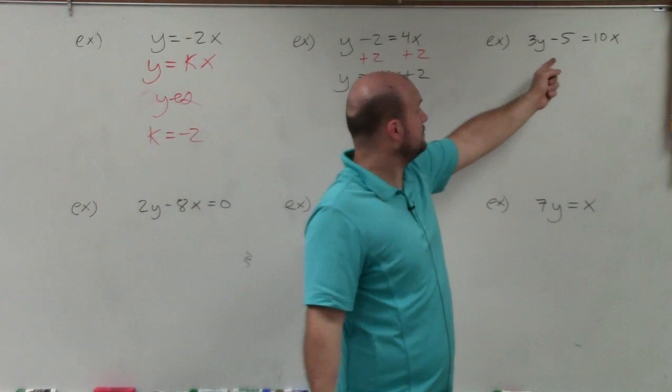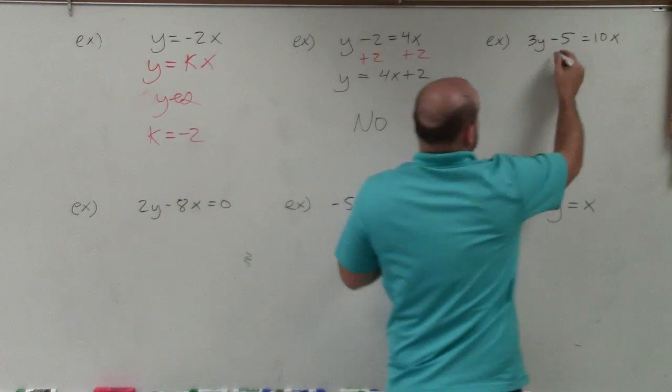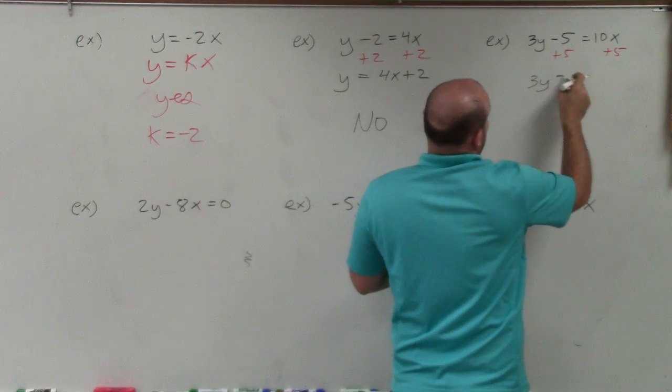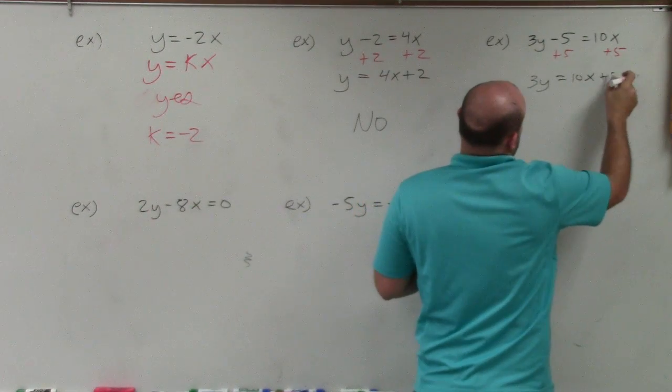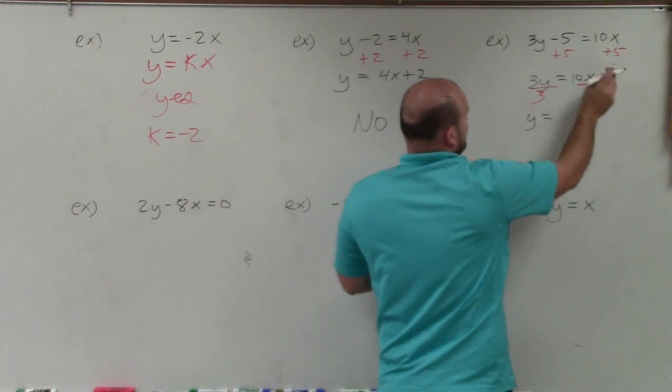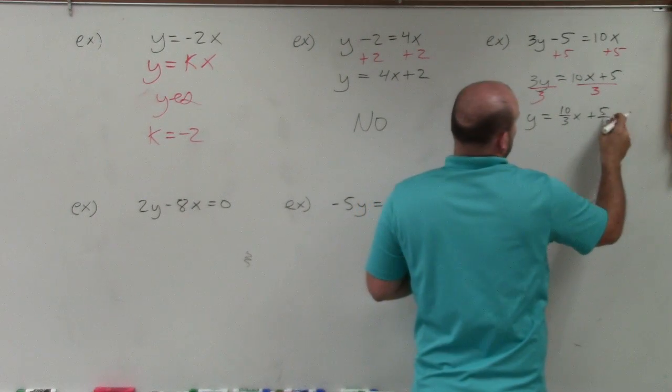Over here, you might say, well, let's go and look if it's direct variation. Well, let's go ahead and solve first. So if I add a 5 to both sides, I get 3y is equal to 10x plus 5, divide by 3, divide by 3, I'm left with y equals 10 thirds x plus 5 thirds.